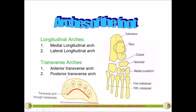The bones forming the medial longitudinal arch are shaded in the picture: the calcaneus, talus, navicular, the three cuneiforms (medial, intermediate, and lateral cuneiform), and the first to third metatarsals. The unshaded bones form the lateral arch on the lateral side — the lateral part of the calcaneus, the cuboid, and the fourth and fifth metatarsals.